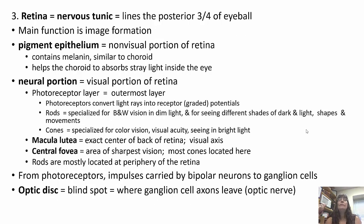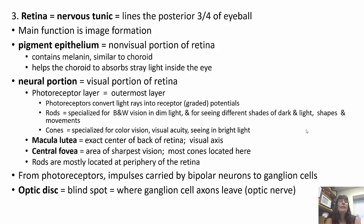The third layer is the retina, the nervous tunic. It lines the posterior three-fourths of the eyeball, and its main function is image formation. There's pigment epithelium, the non-visual portion of the retina, which contains melanin similar to the choroid — it helps the choroid absorb stray light so it doesn't scatter everywhere. The neural portion is the visual portion of the retina, the photoreceptor layer, where photoreceptors capture light rays and convert them into graded potentials.